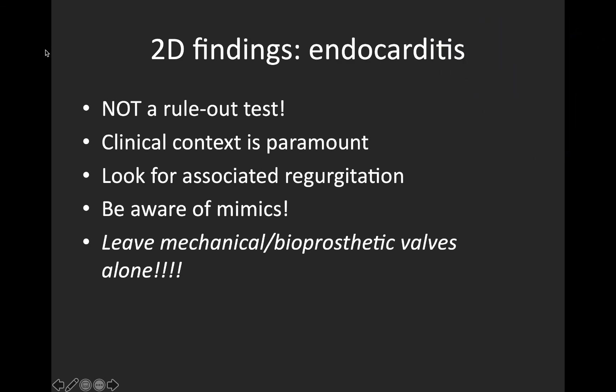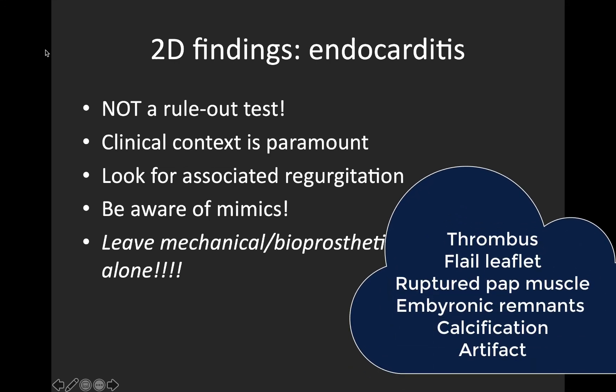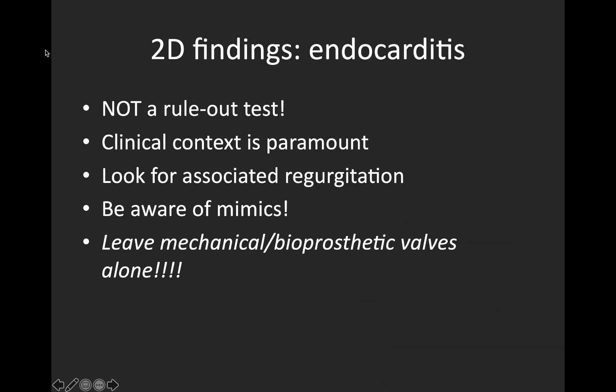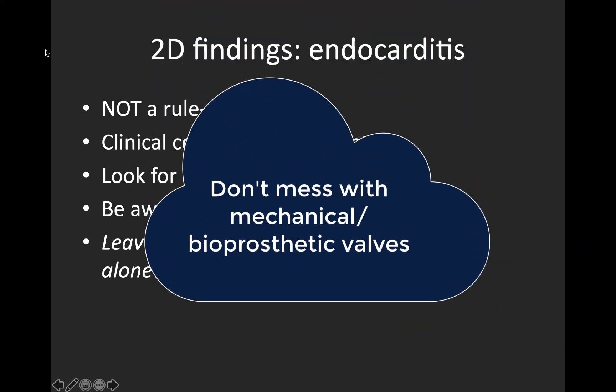It's important to be aware of limitations and things that can trick you, as there are a number of things that can mimic vegetation. The most common is thrombus, which also appears echocardiographically as a mobile hyperechoic density — clinical context is often key to distinguishing these two. Other potential mimics are ruptured papillary muscles or flail leaflets, embryonic remnants, calcification, or artifact. Finally, mechanical and bioprosthetic valves are a whole other ball of wax and are best left to experienced full-time sonographers and echo-certified cardiologists.